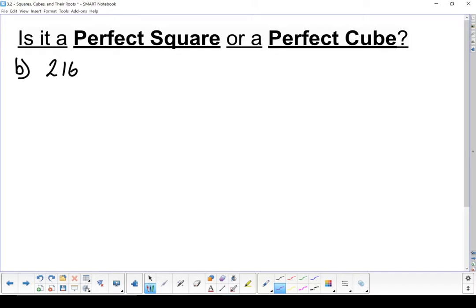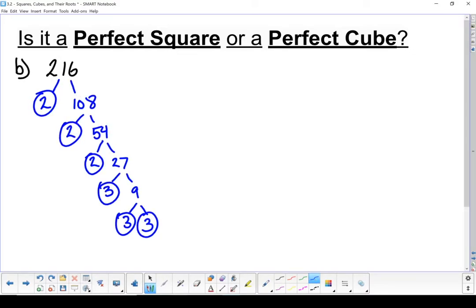Let's do another example: 216. As always, we're going to start with prime factorization. We'll write it out as a product of its prime factors. Now as I look at those prime factors,